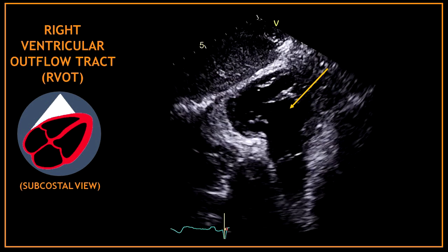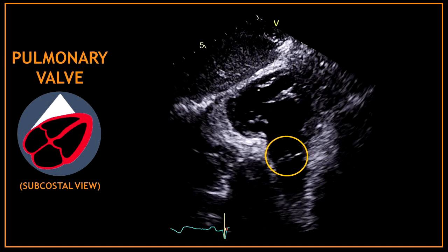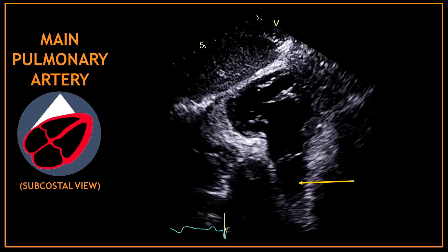You can also see the aortic root or sinus of Valsalva, and sometimes part of the proximal ascending aorta. If you tilt the probe a bit more you can obtain a right ventricular outflow view, where at the top we can see the right ventricular outflow tract, followed by the pulmonary valve, the main pulmonary artery, and sometimes the pulmonary artery branches.